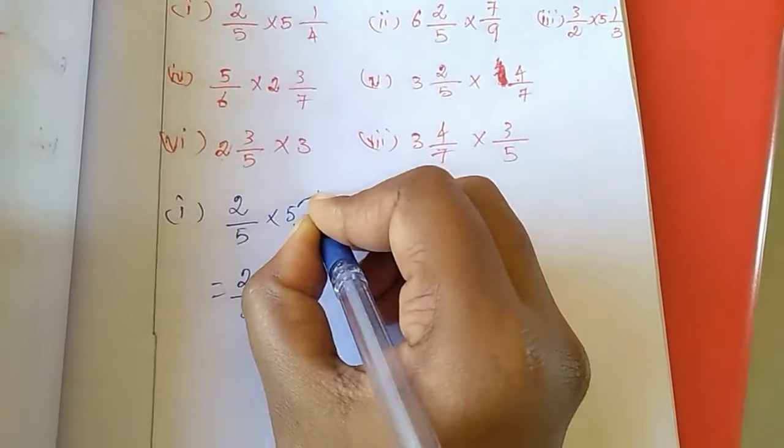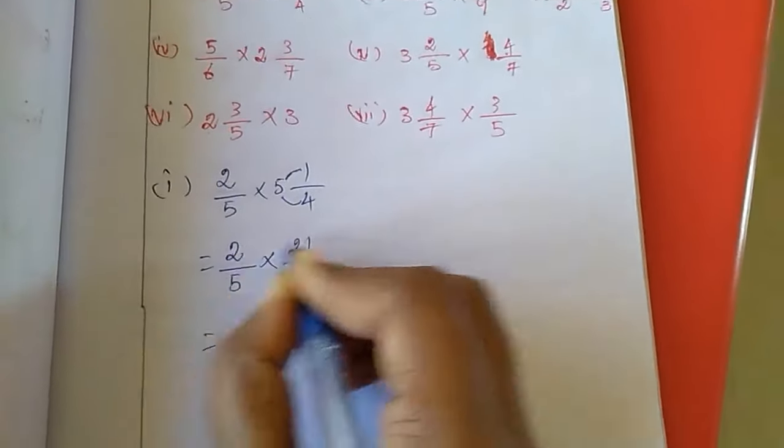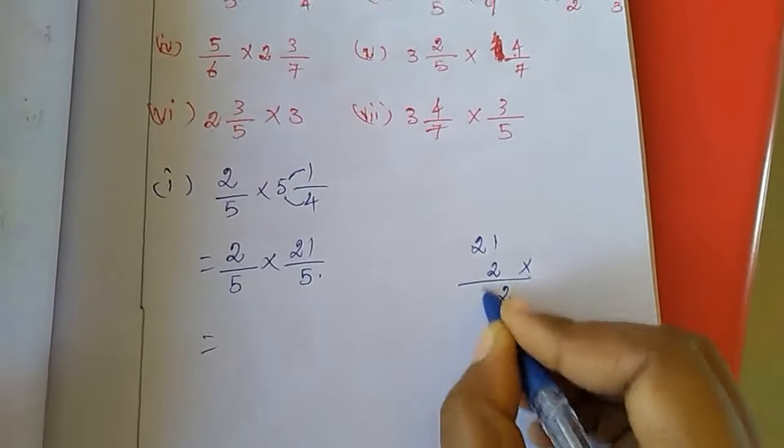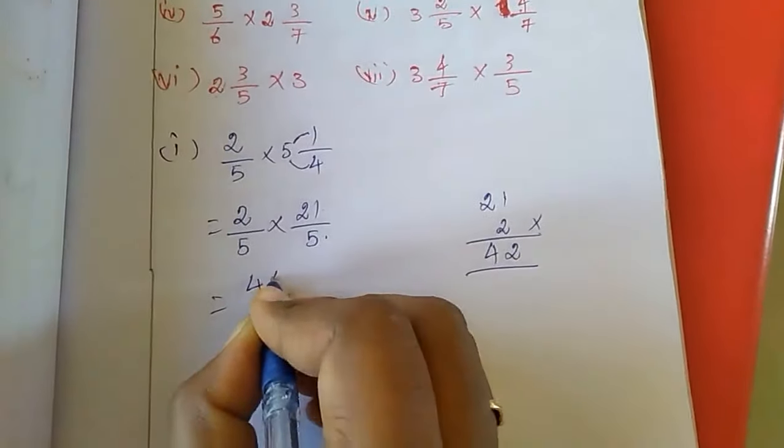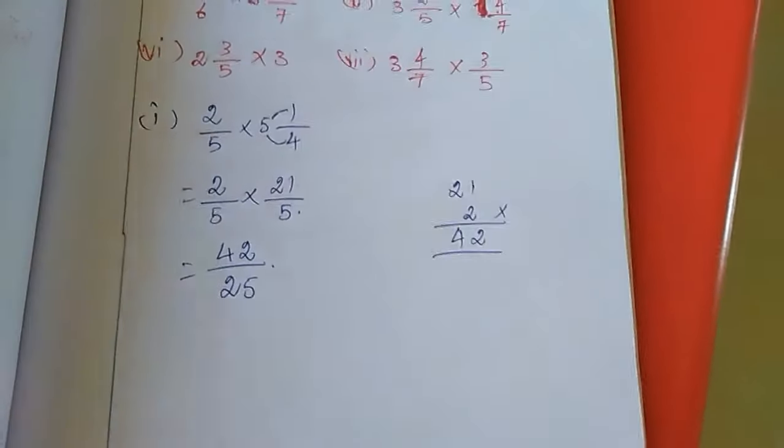So 2/5, it will come as is. Here, 4 times 5 is 20, 20 plus 1 is 21, so 21 divided by 4. Now I am multiplying this: 21 into 2. 1 times 2 is 2, 2 times 2 is 4, so answer is 42 divided by 5 times 4 is 25. This is the answer for first sum.